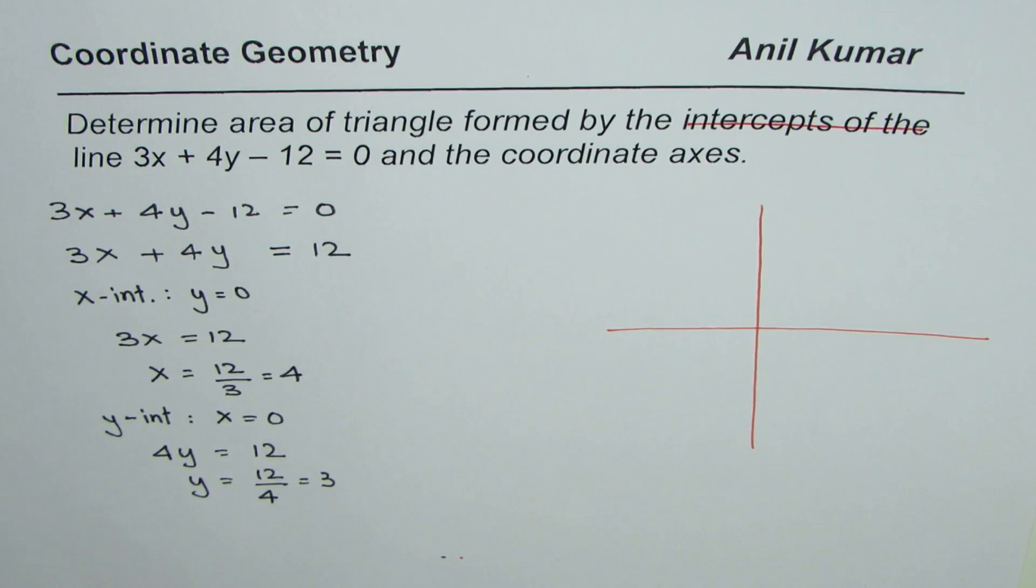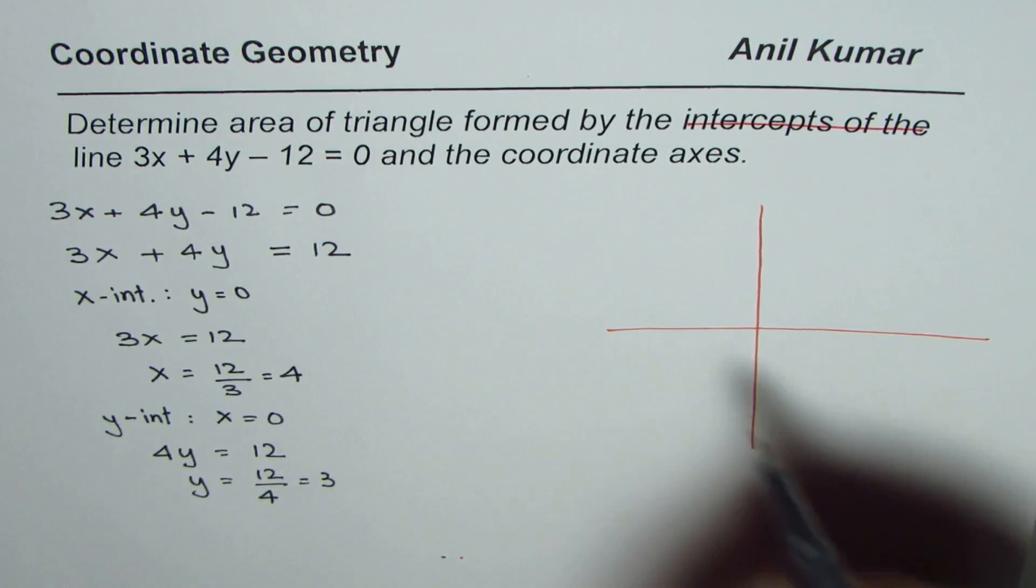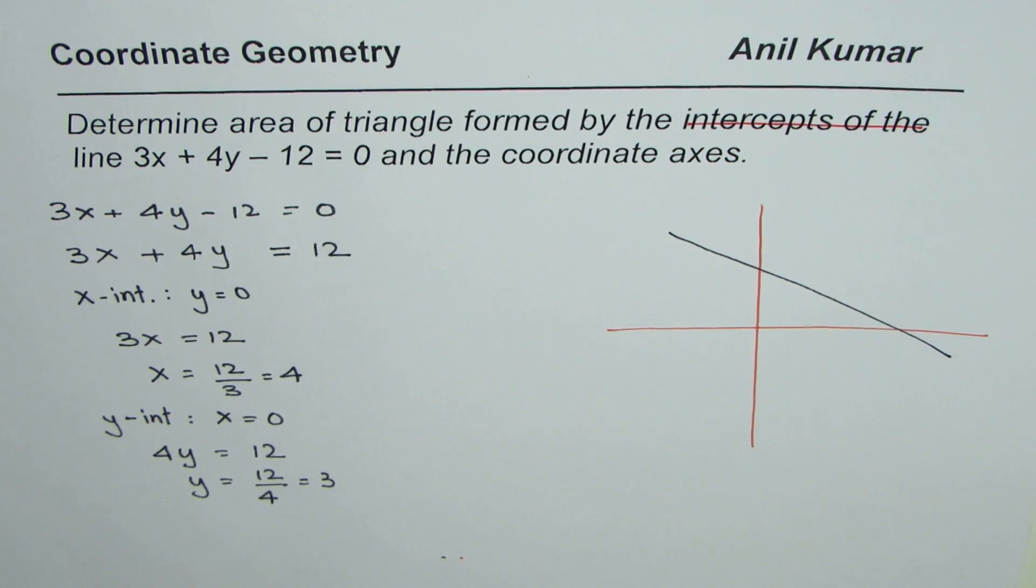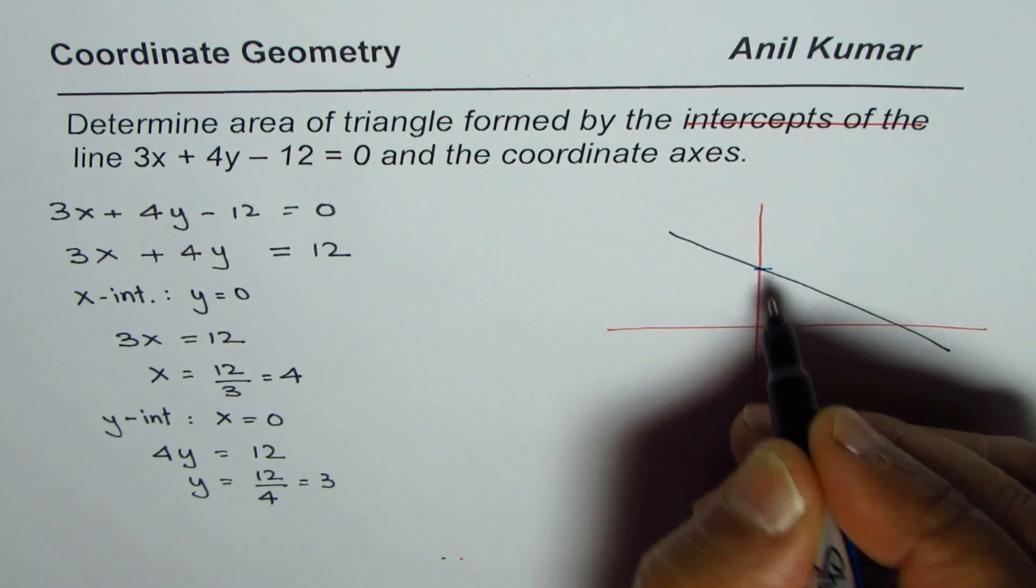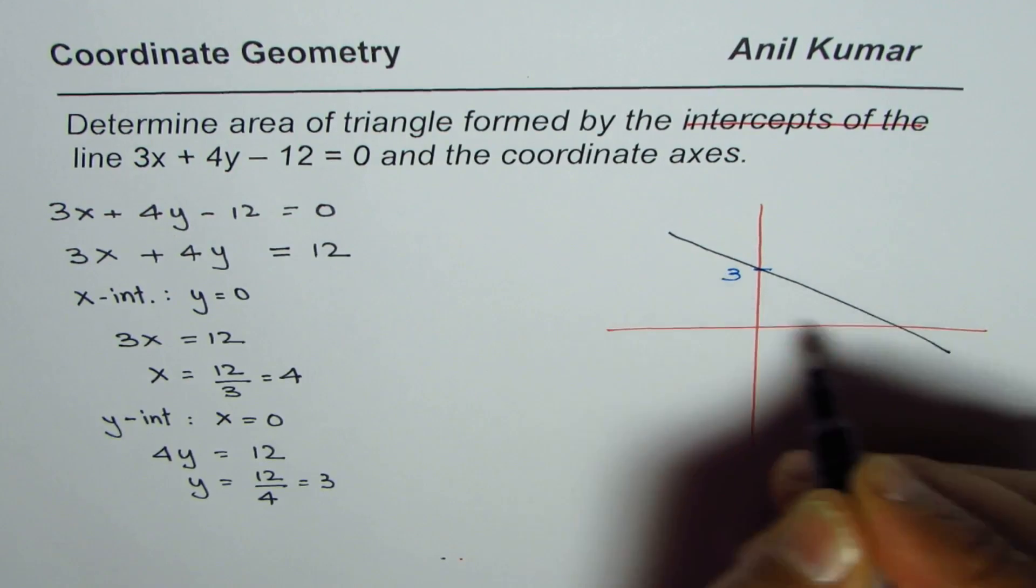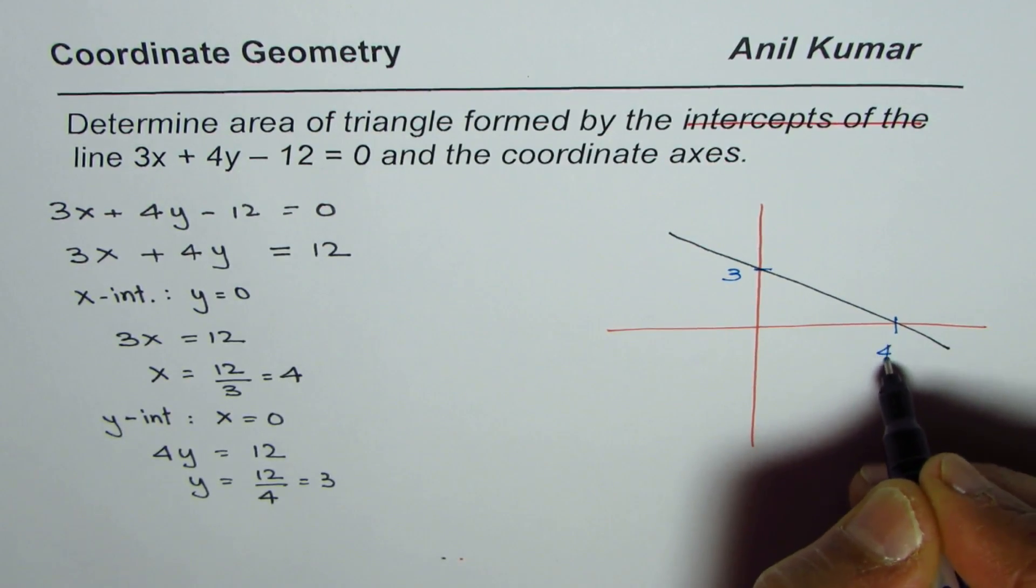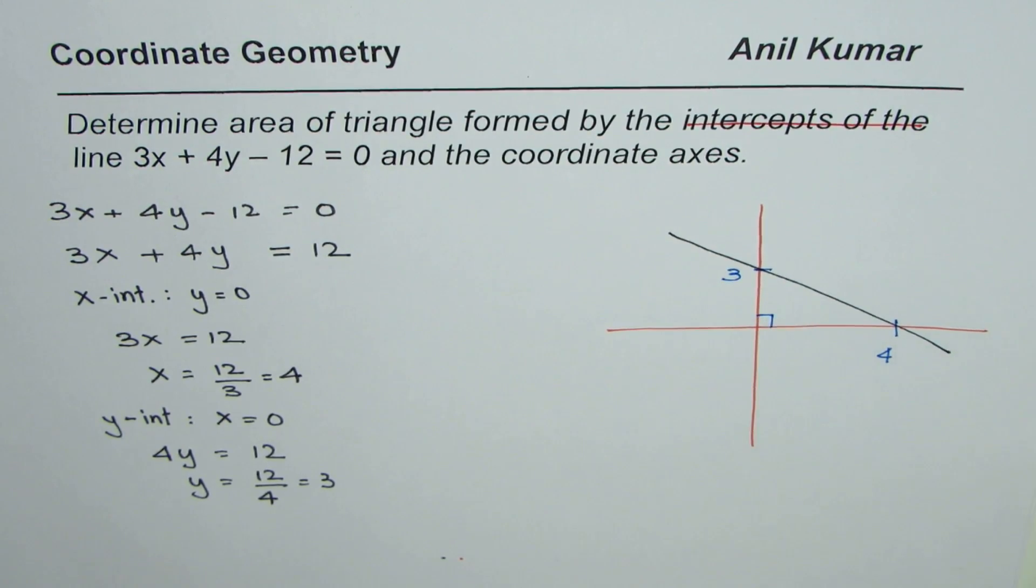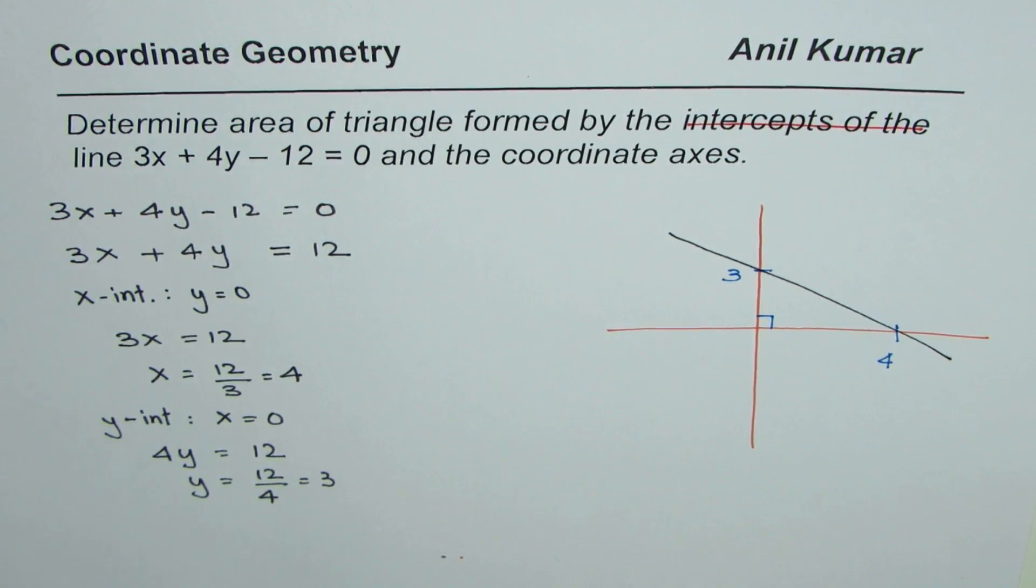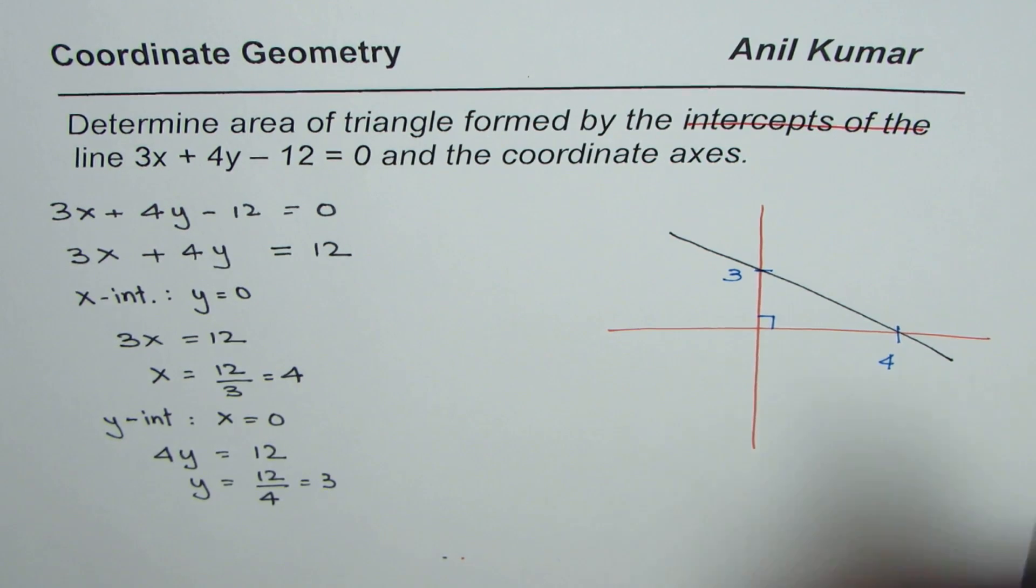So let me actually sketch a line first and then I'll write down the intercepts. So that is the line for us. We found that the y intercept is 3 and x intercept is 4. Coordinate axes will always be at right angles and therefore the area of the triangle which is formed.